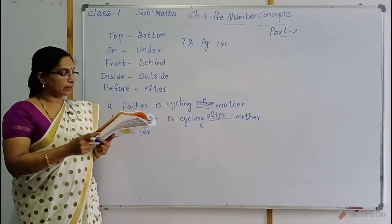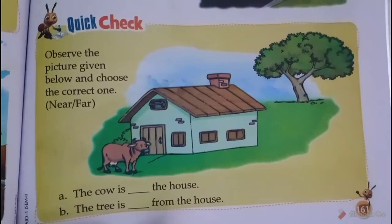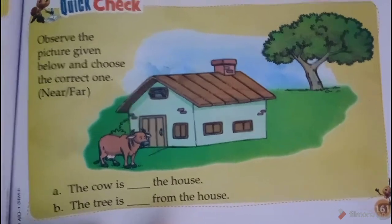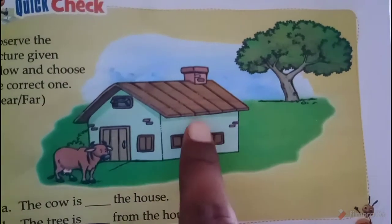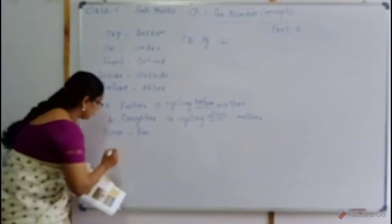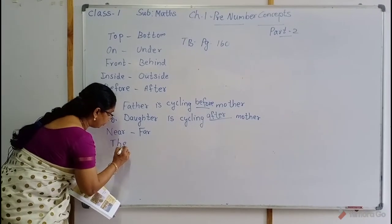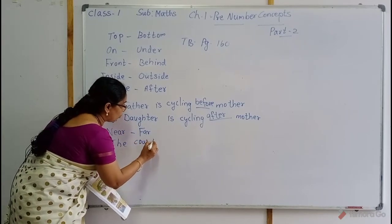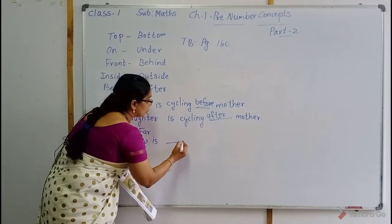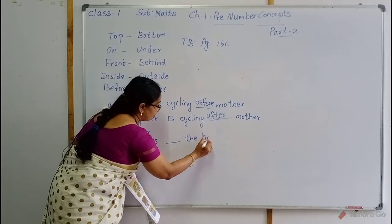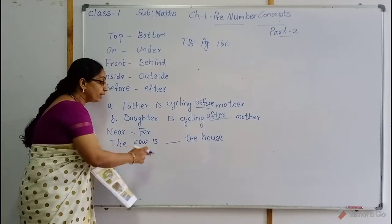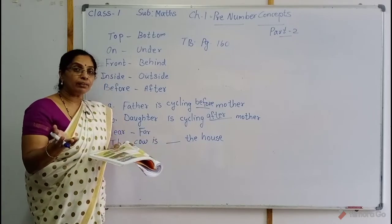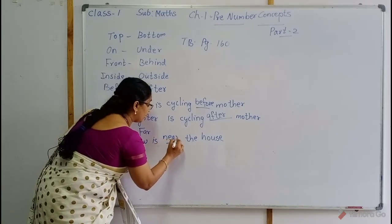The next exercise: observe the picture given below and choose the correct one. Options are near and far. You can see a tree, a house and a cow. The question: the cow is — dash — the house. Near or far? The cow is near the house. N-E-A-R. Near.